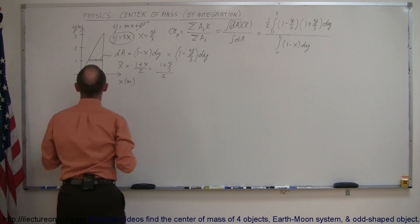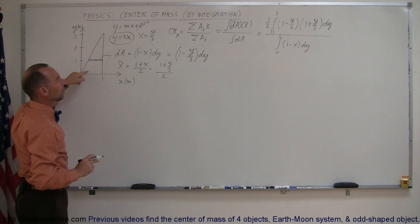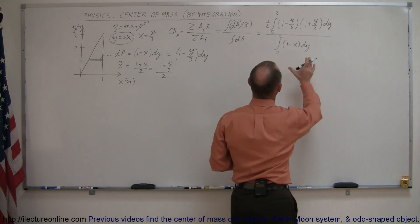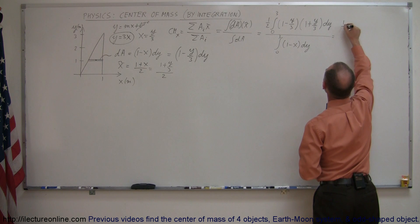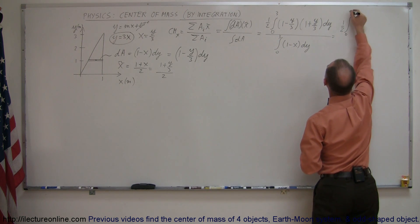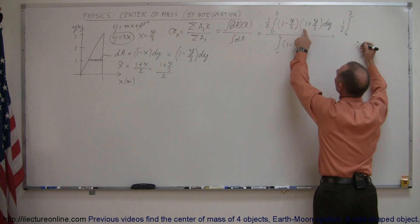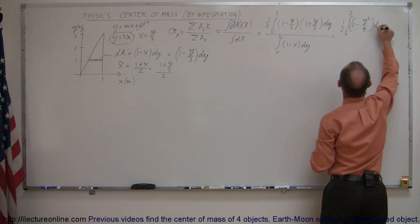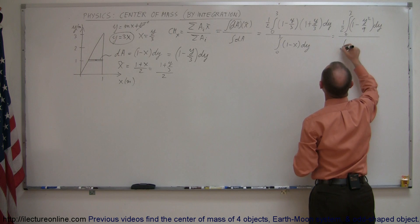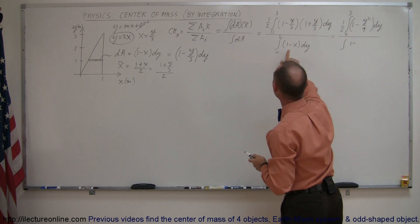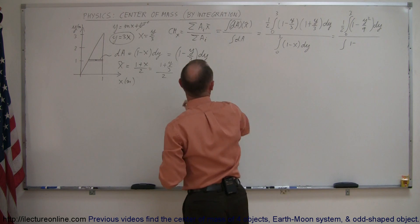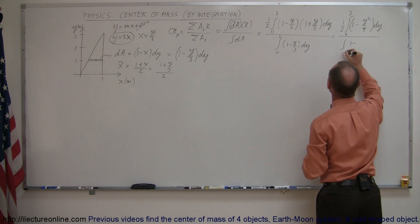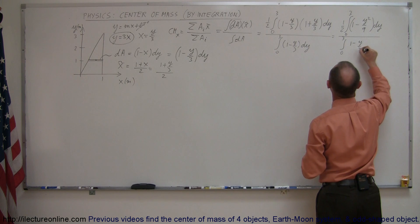Now, if we're a little bit smart about it, we can see that it's fairly easy to find the area of this whole plate, so we really don't need to integrate it, but I'll go ahead and do it as an illustration anyway. So the next thing I'm going to do is multiply this out a little bit, so this is equal to 1 half times the integral from 0 to 3. This is the sum and difference of these two binomials, so we can see that it's 1 minus y squared over 9 times dy, divided by the integral of 1 minus y over 3 from 0 to 3 dy.